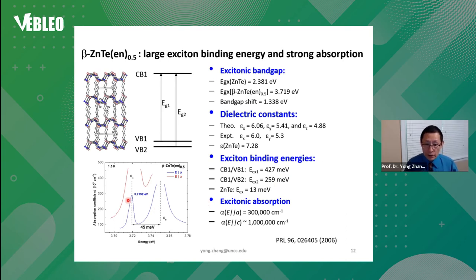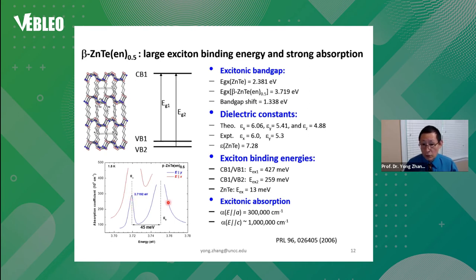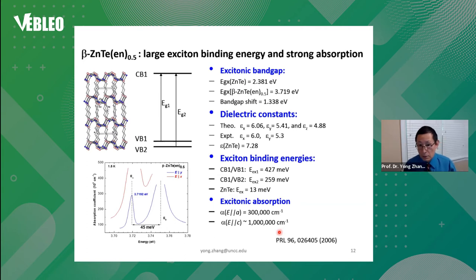Also interesting is that absorption is much enhanced compared to conventional 3-5 or 2-6 materials, where you typically get 50,000 inverse centimeter. In this structure we have anisotropic absorption — even the weak direction is 300,000 inverse centimeter and the stronger direction is over 1 million inverse centimeter, much stronger than conventional semiconductors.